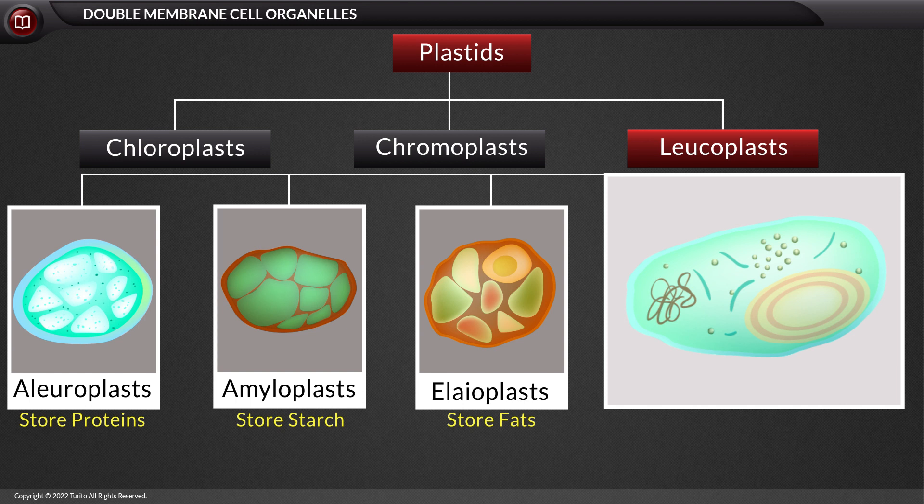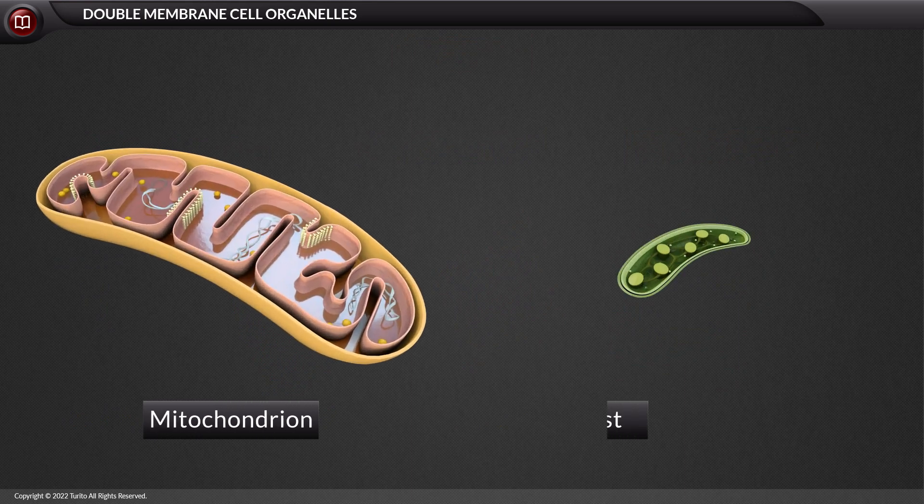These are the details of the double-membraned organelles, the mitochondria and chloroplasts.